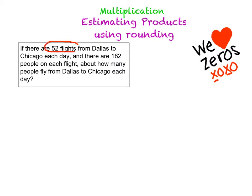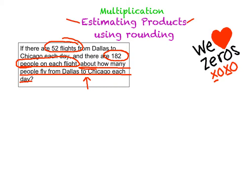So I'm going to circle my important info I need. I need 52 flights. We're going to then circle 182 people on each flight, because that's important — it's the people we're measuring. About how many people fly from Dallas to Chicago each day. The word 'about' tells me I need to estimate. And right on my paper, it also says I need to estimate.